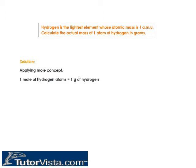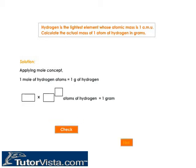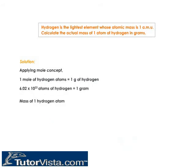So how many atoms of hydrogen are required to make up one gram? Use the calculator if you need help. 6.02 into 10 to the power 23 atoms of hydrogen is equal to 1 gram.